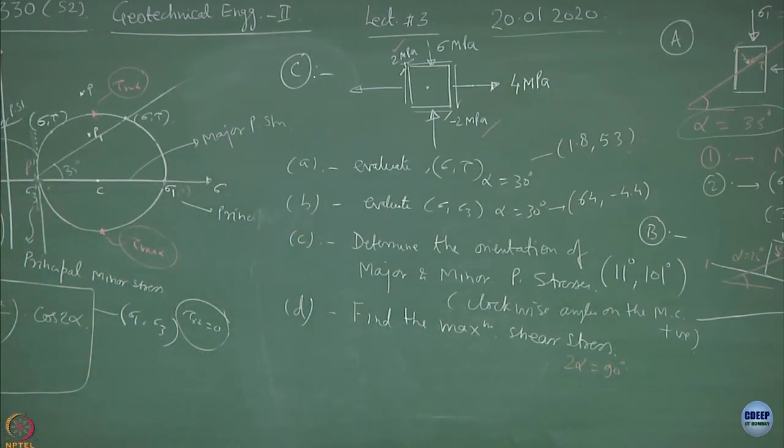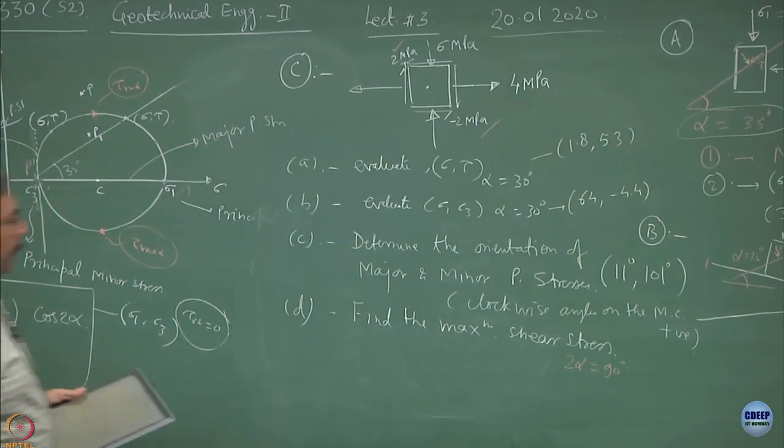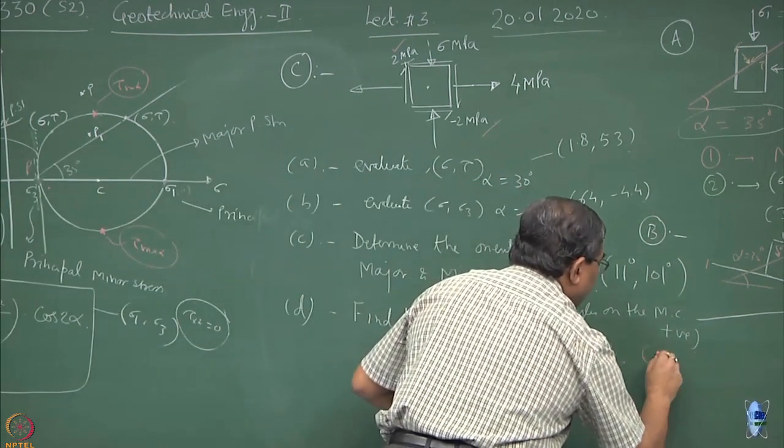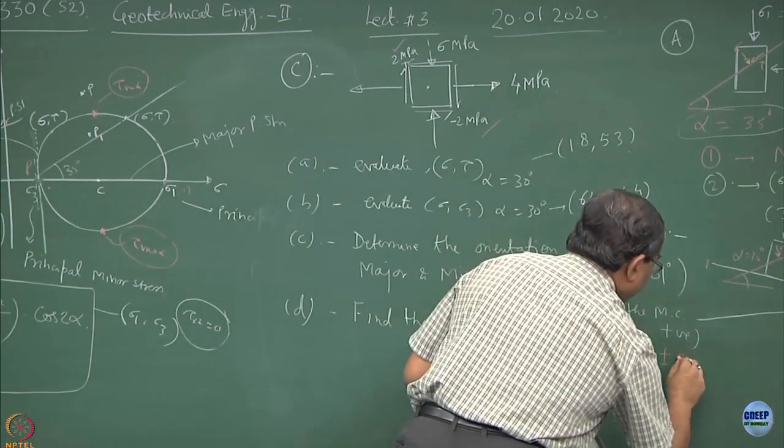So try to solve this and this comes out to be 2 alpha equal to 90 degree. So alpha is 45 degree and the state of stress would be plus minus 5.4 MPa.